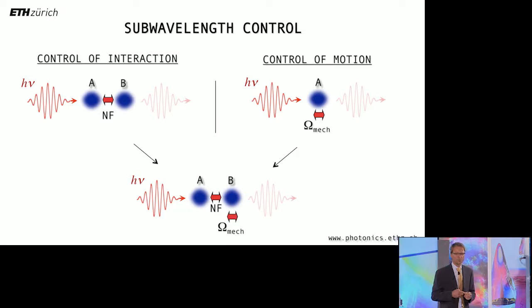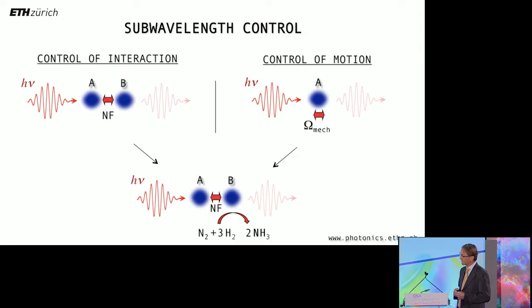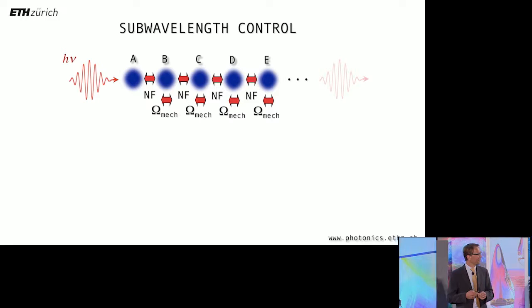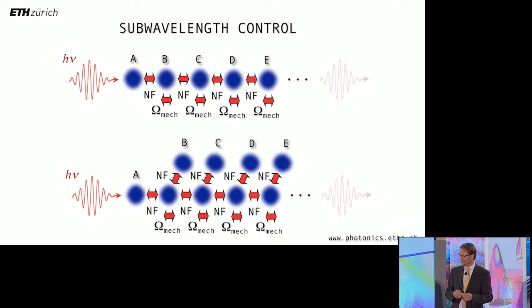So in principle, we can also replace this mechanical motion by any other process. For example, by a chemical process, like in catalysis. So that brings us into the context of photocatalysis. Then we can also think of complicating this a little bit more. We're not necessarily restricted to two entities. We can think of a process where the near field activates motion and the motion in turn changes the near field and so on. This would be like a higher order nonlinear process here. And in principle, the near field can also actuate many processes in parallel. This is shown here. So a lot of such experiments are underway in different laboratories. I don't have the time to go into further detail. I would just like to conclude here and say there's plenty of room at the sub-wavelength scale. Thank you.